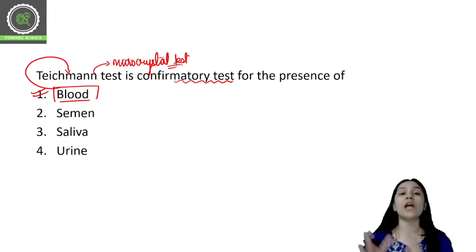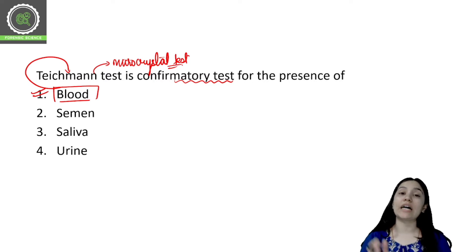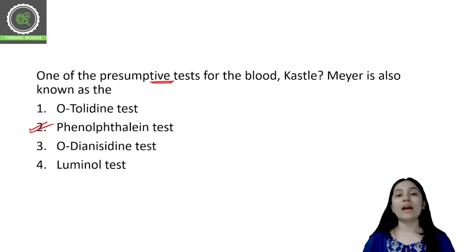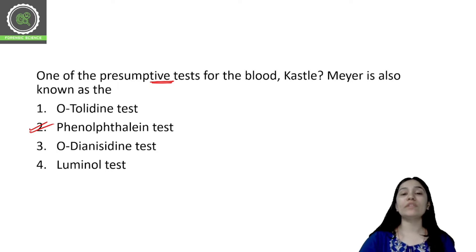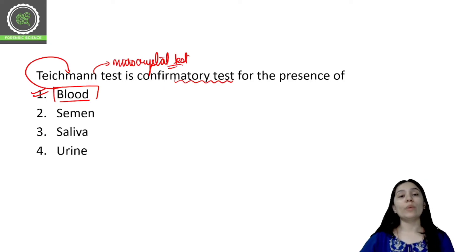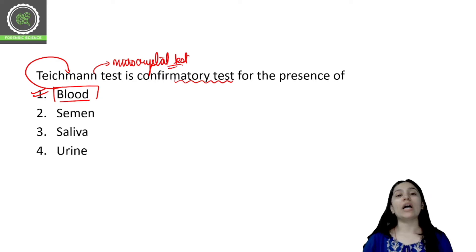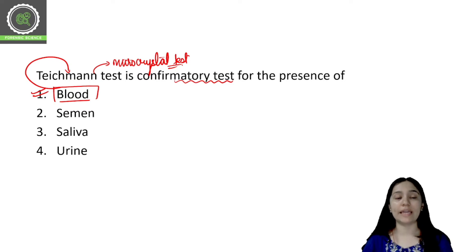If this test comes out positive, it means 100% blood is present in your sample — that is confirmed. The Phenolphthalein test is a presumptive test, meaning there is no full certainty. It is possible that some other reason caused a positive result — there are many enzymes that can cause a false positive in the Phenolphthalein test. So if the Phenolphthalein test is positive, you must do a confirmatory test. For confirmatory testing you can do the Teichmann test or the Takayama test. The Takayama test is again a confirmatory microcrystal assay for blood identification. So the Teichmann test is the confirmatory test for the presence of blood.